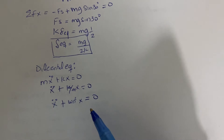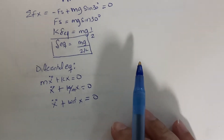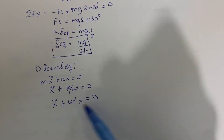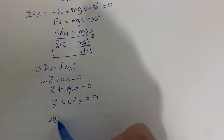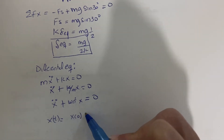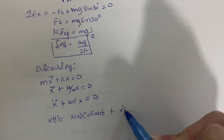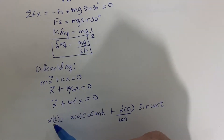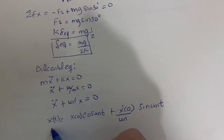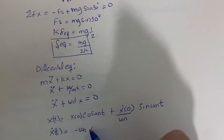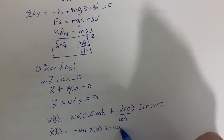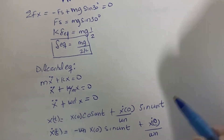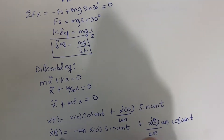We need to solve this differential equation. The standard solution gives us the displacement: x(t) = x₀ cos(ωₙt) + (ẋ₀/ωₙ) sin(ωₙt). Taking the derivative, the velocity is: ẋ(t) = −ωₙ x₀ sin(ωₙt) + ẋ₀ cos(ωₙt).